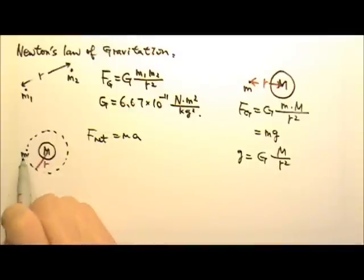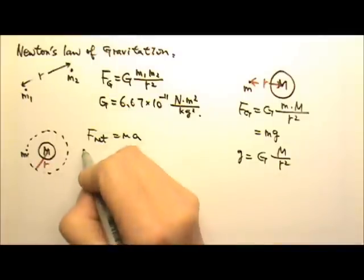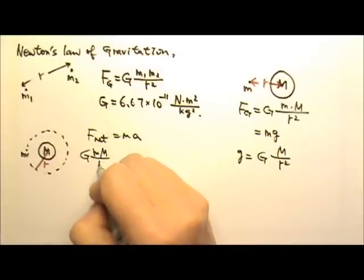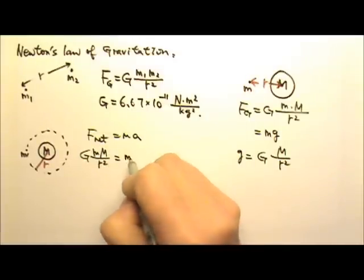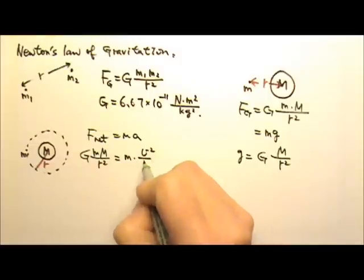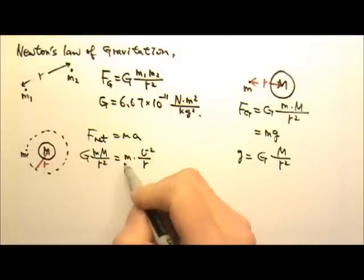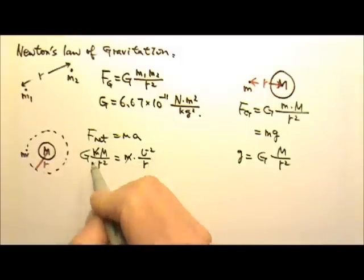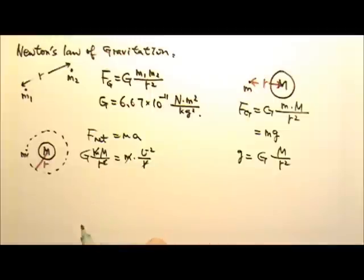The net force acting on the satellite is the gravitational force and that will be G M M over r squared. And because the satellite is doing circular motion, the acceleration is V squared over r. So in this case, if we need to find the orbit speed, for example, I can cancel the little M, cancel one of the little rs, and then I'll get the orbit speed to be square root of G M over r.